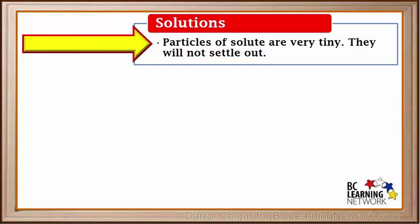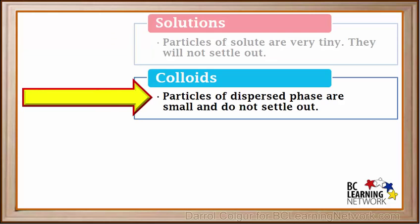Particles in a solution never settle out, so gravity separation cannot be used for solutions. You can leave a solution sitting for a very long time and its solute will not settle out. In a colloid, the particles that are dispersed in the other substance are too small to sink or settle out, so gravity separation cannot be used for colloids either.